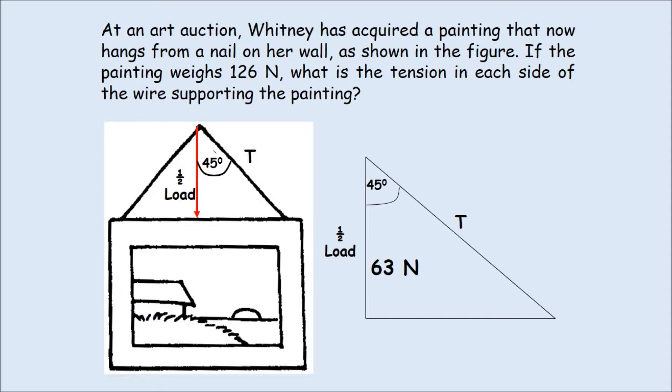At an art auction, Whitney has acquired a painting that now hangs from a nail on her wall, as shown in the figure. If the painting weighs 126 newtons, what is the tension in each side of the wire supporting the painting?